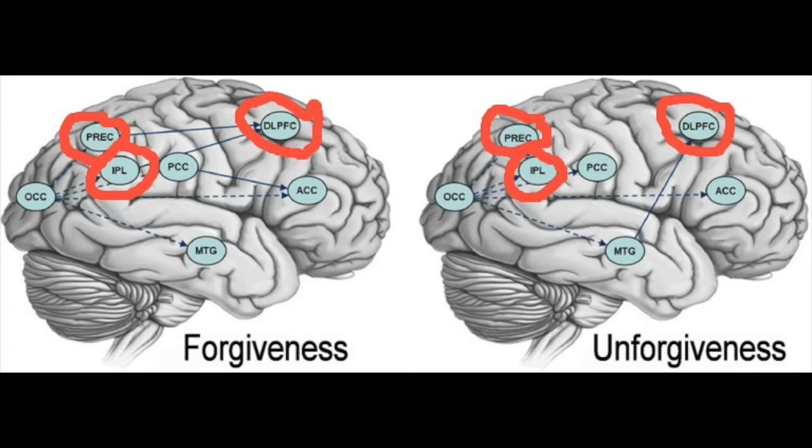In the group that practiced forgiveness, the precuneus was connected to the dorsolateral prefrontal cortex, and the inferior parietal lobule was also connected to the dorsolateral prefrontal cortex.